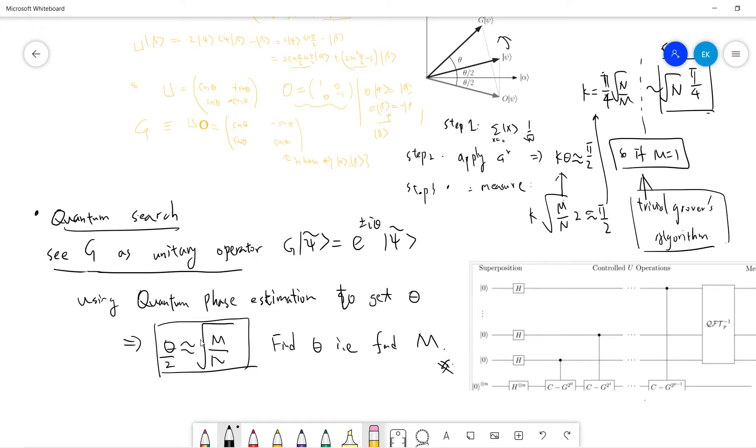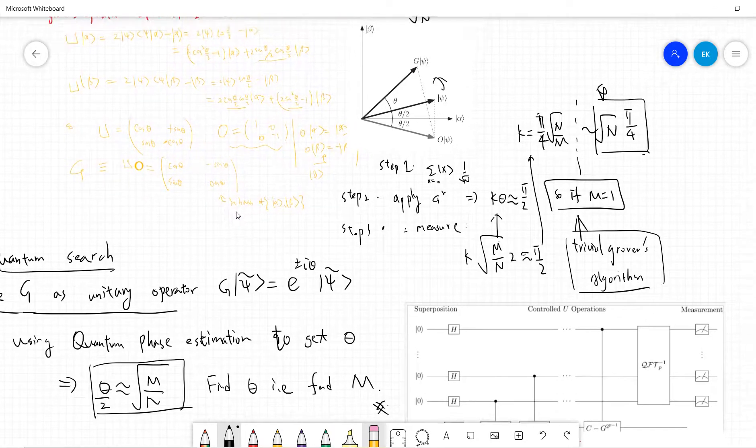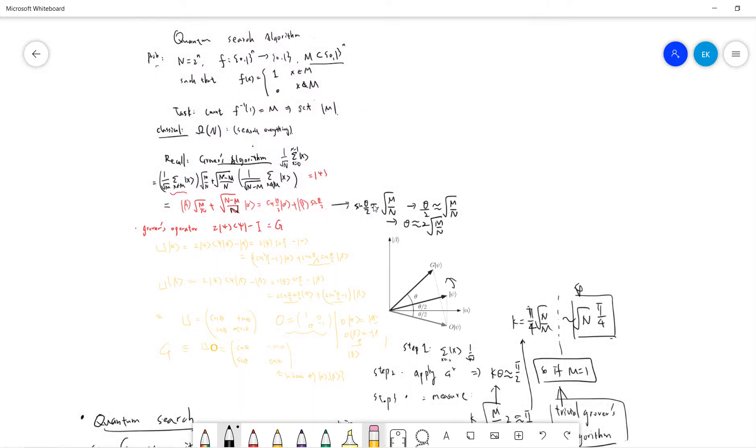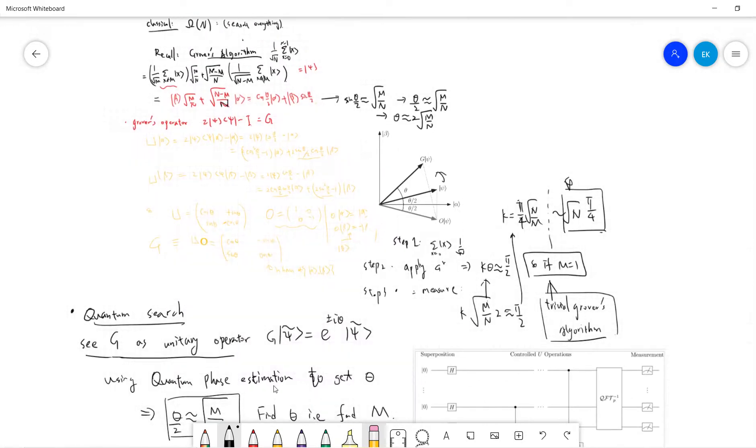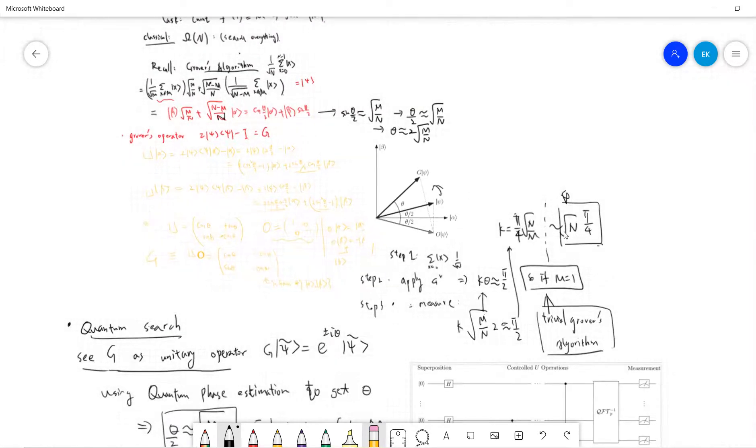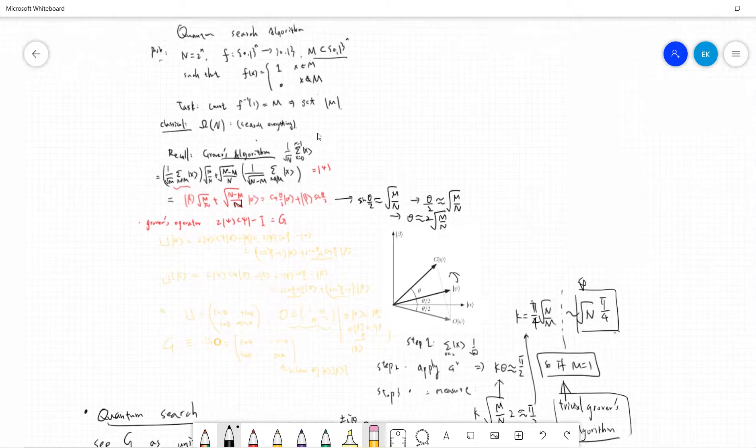So find θ, we just define M. So this is the interesting quantum search algorithm, basically combine Grover's algorithm and the phase estimation. It's still very interesting, and you only need sqrt(N) times to get how many M.